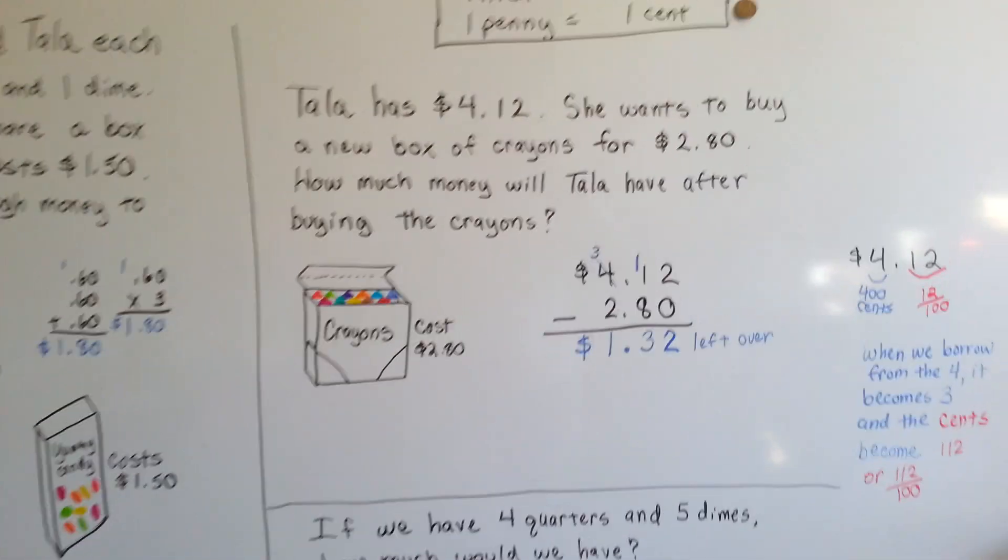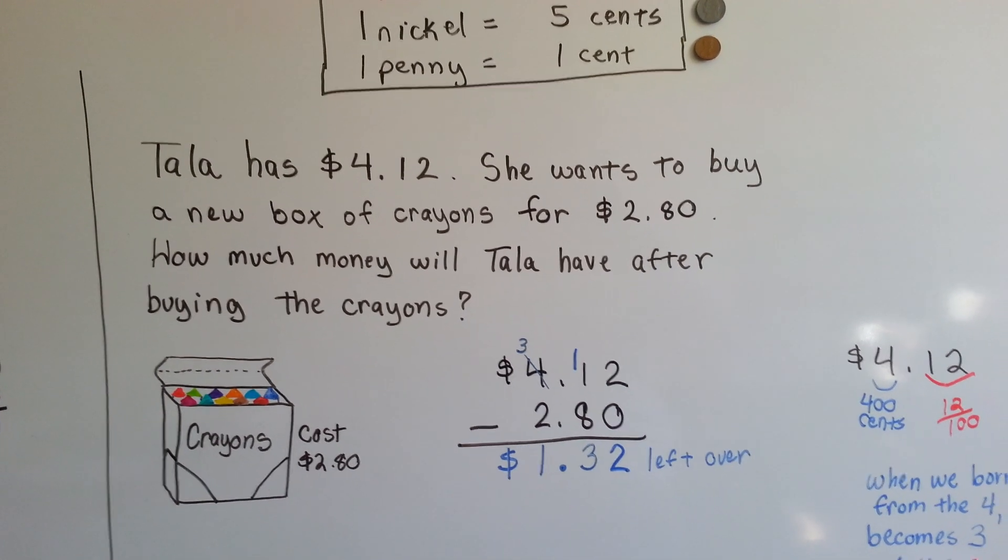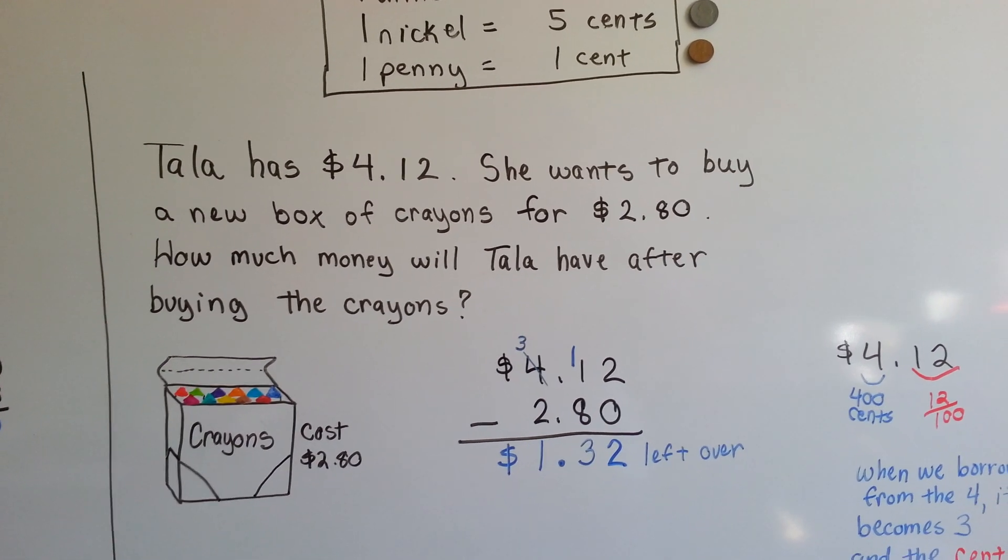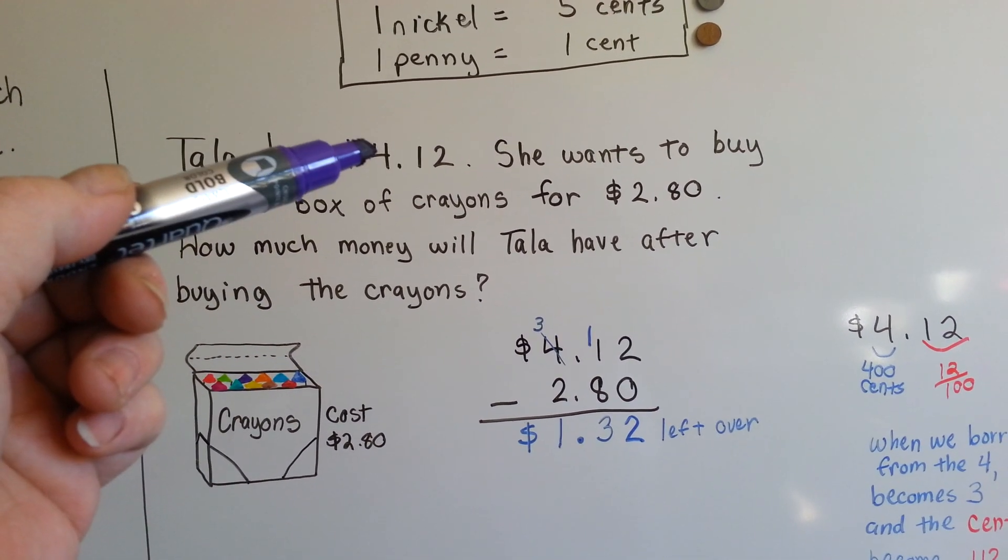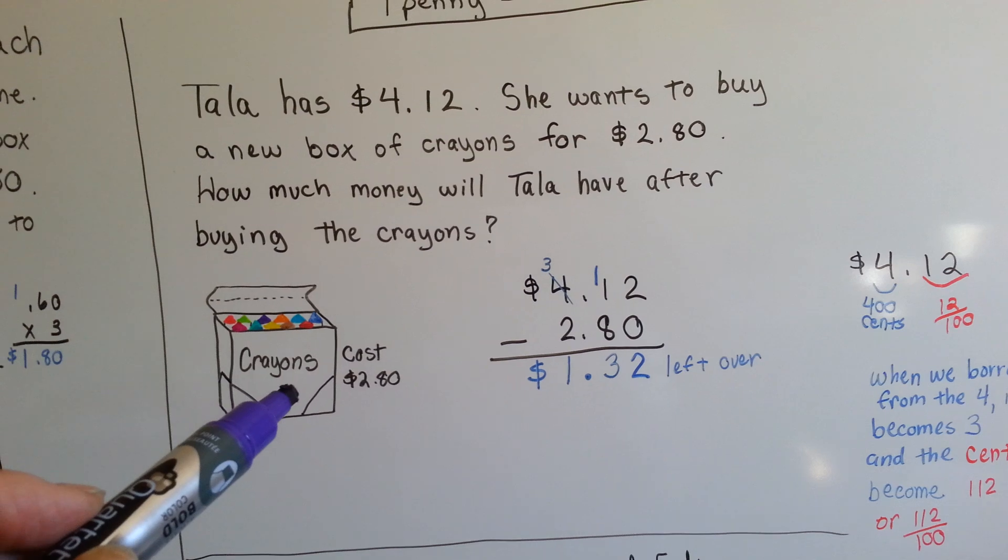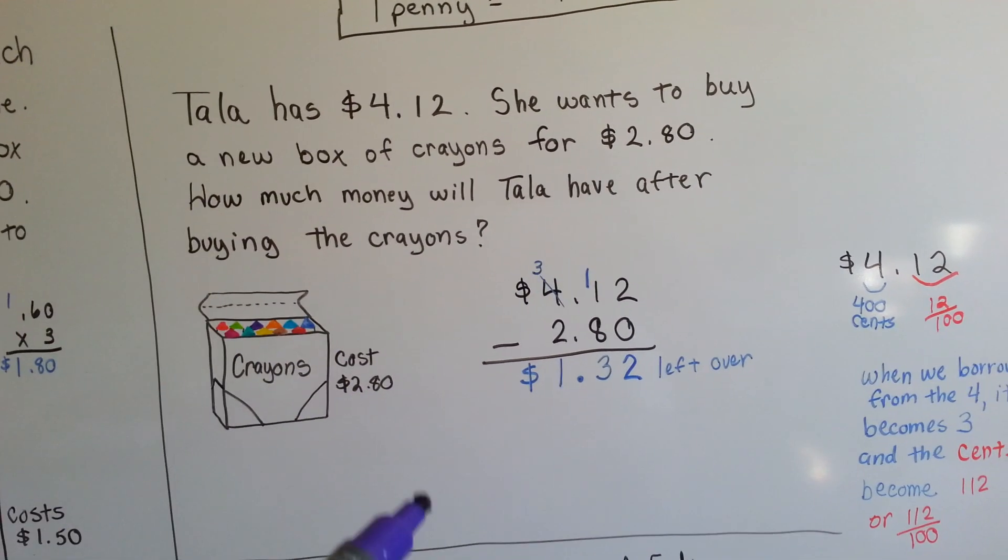Next one. Tala has four dollars and twelve cents. She wants to buy a new box of crayons for two dollars and eighty cents. How much money will Tala have left over after buying the crayons? She's got four dollars and twelve cents. The crayons cost two dollars and eighty cents, so we need to subtract. We need to take the cost of the crayons away from how much she's got in her pocket.